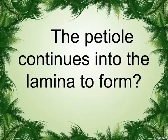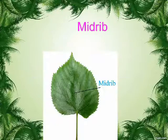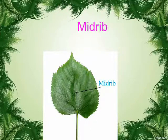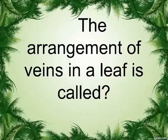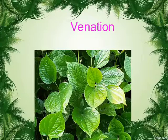The petiole continues into the lamina to form the midrib. The arrangement of veins in a leaf is called venation.